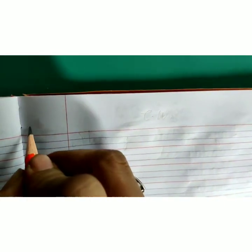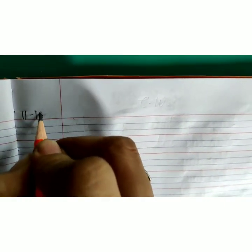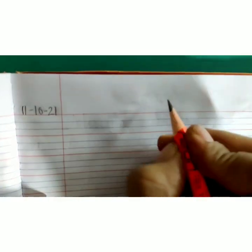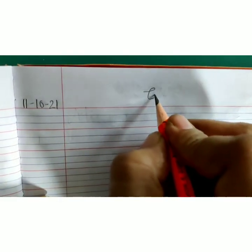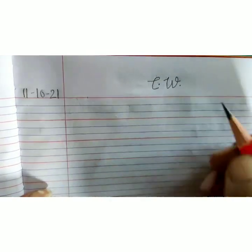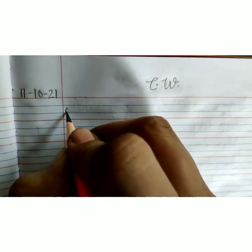Hello students, today we will write missing letters. Open your notebook and write down today's date in this margin. 11-10-21 at the top right here, capital C dot capital W classwork.